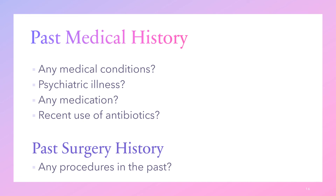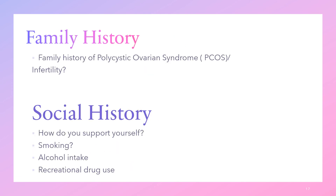For past medical history, has this patient been managed for any medical conditions such as high blood pressure or diabetes mellitus? Has she ever had a psychiatric illness? Ask about medications and recent use of antibiotics. Also go through past surgical history, asking about any procedures in the past. A positive family history of polycystic ovarian syndrome or infertility is very important. For social history: how does the patient support herself, what is her occupation, and does she smoke, take alcohol, or use recreational drugs?